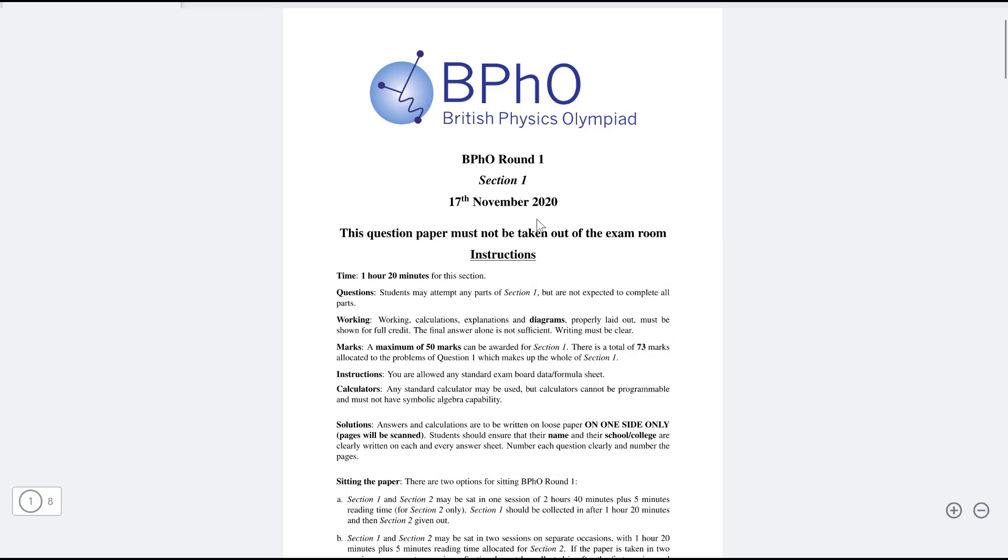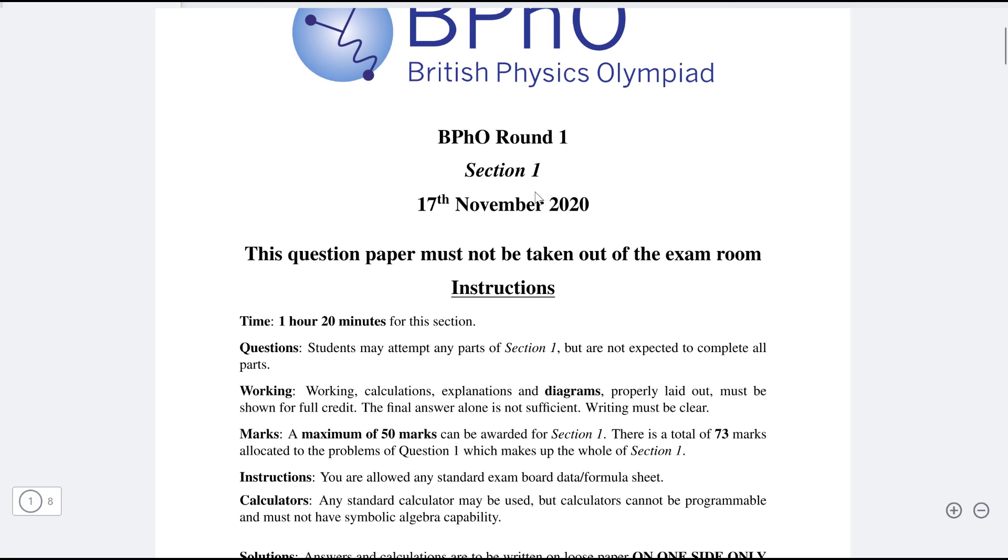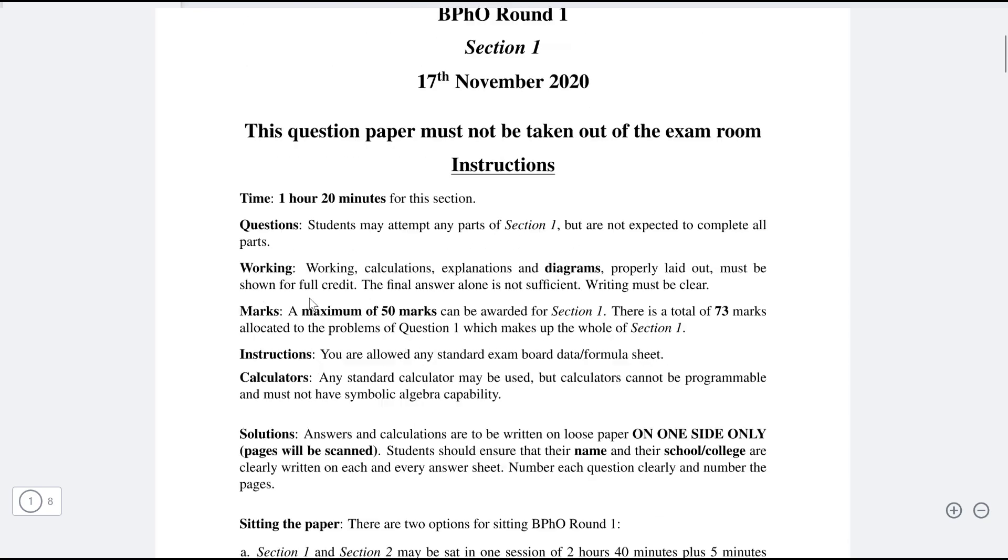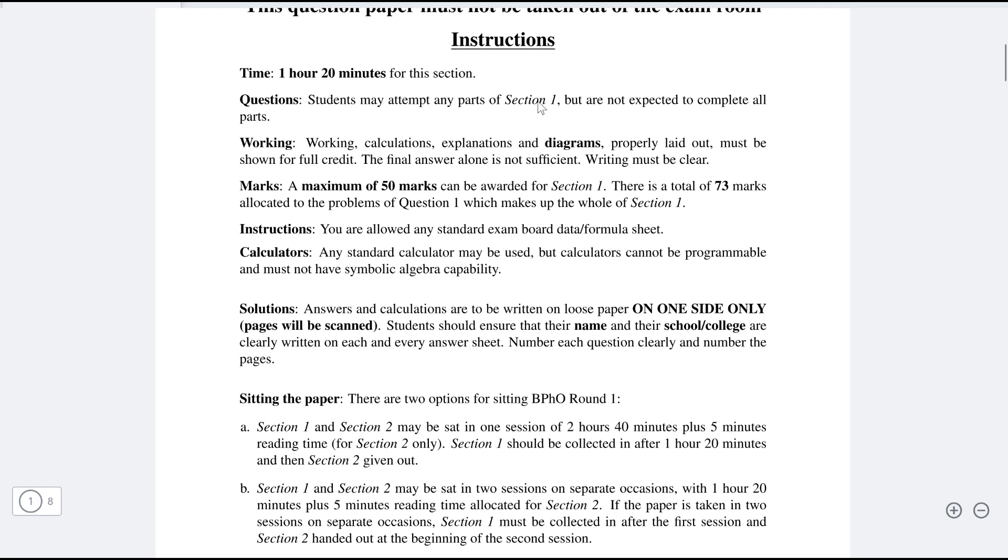To illustrate the different sections, let's have a look at the British Physics Olympiad round one from last year, which took place on the 17th of November 2020. These papers are available on the official British Physics Olympiad website. Please check the link in the description where you'll be able to find all of the past papers. First off, the time for section one is one hour and 20 minutes, and students may attempt any part of section one but are not expected to complete all of the parts. This is really important—you're not actually expected to complete all of the different parts.